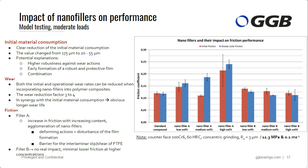This diagram shows the impact on friction performance. An increase in friction is obvious when using higher volume fractions of Filler A. At the moment, we think this comes from agglomeration of ceramic nanoparticles — such agglomerates lead to deforming interactions that contribute to friction, and could also disturb the film formation. For Filler B, we do not really see an impact on friction — minimal lower friction at higher volume fractions of Filler B.